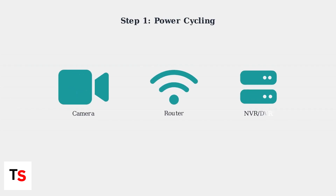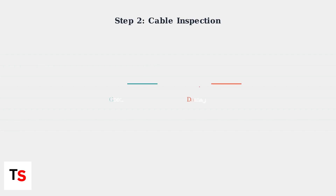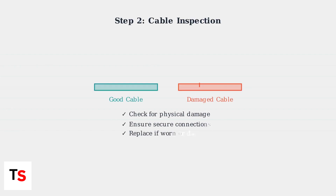The first and most effective solution is power cycling. This simple step resolves many connection issues by refreshing all system components. Next, inspect your cables carefully. Damaged Ethernet or BNC cables are a major cause of signal loss — look for physical damage, loose connections, or worn connectors.